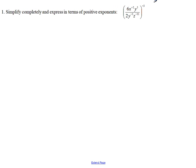We want to simplify this expression completely: 6x to the negative 2, y to the 5th, over 2y to the negative 3, z to the negative 11, and the whole thing raised to the negative 3.